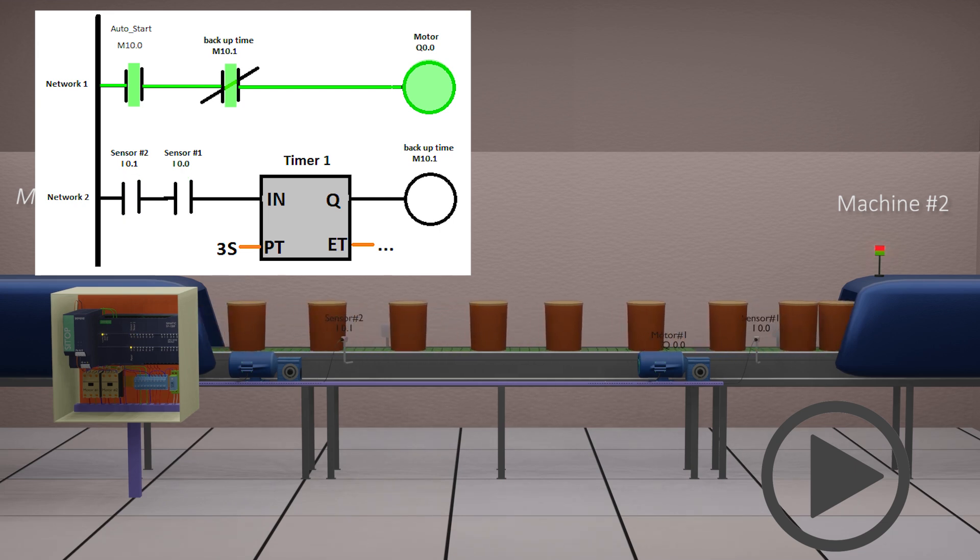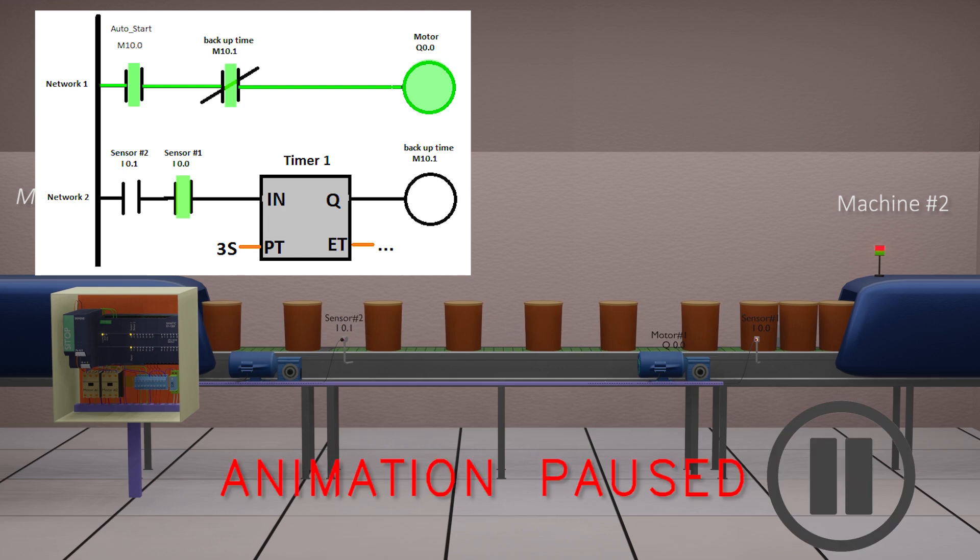Now you can see that machine 2 stops and its inlet conveyor stops. Buckets start to accumulate on it and backup sensor 1 turns on continually.